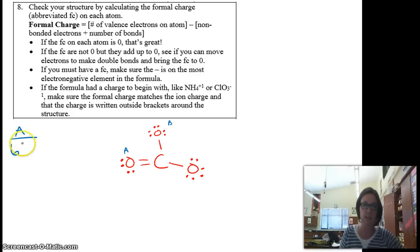So for oxygen type A, oxygens have 6 valence electrons minus 1, 2, 3, 4 non-bonded electrons. And then there are 2 bonds. So that adds up to 6. 6 minus 6 is 0. So for oxygen type A, the formal charge is 0.